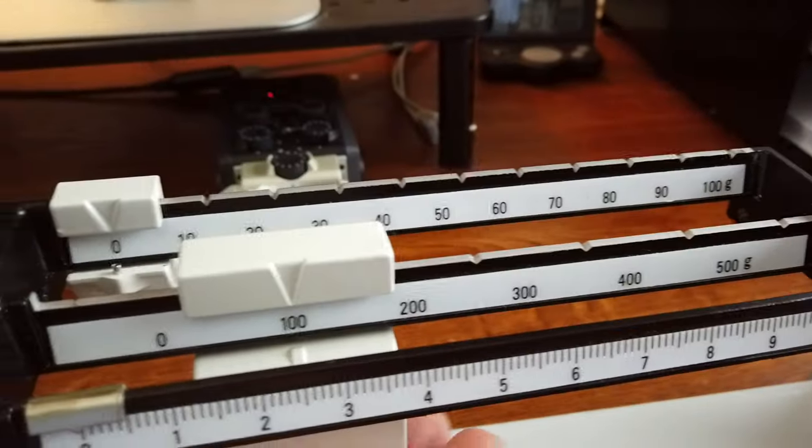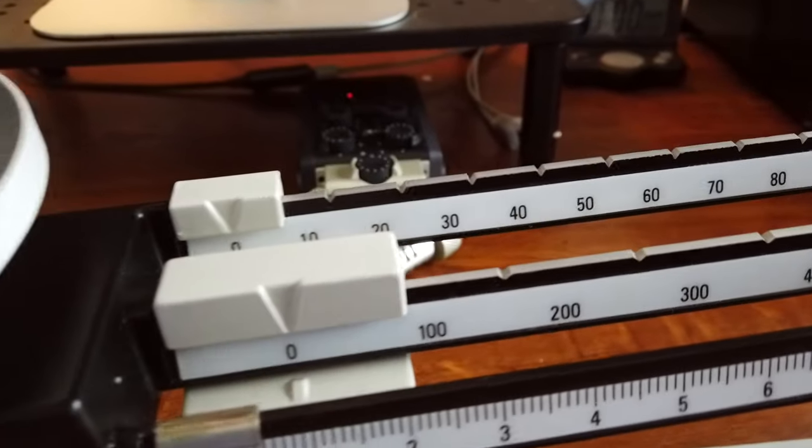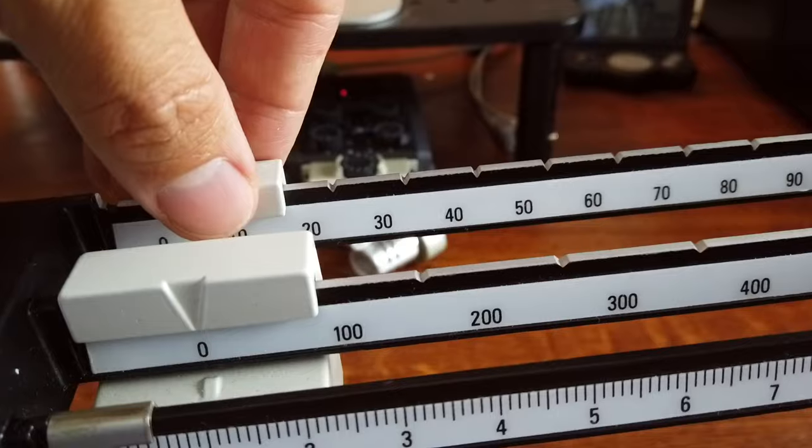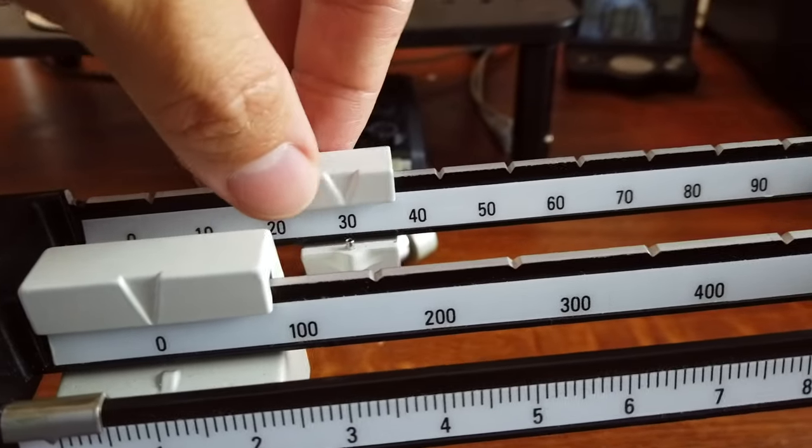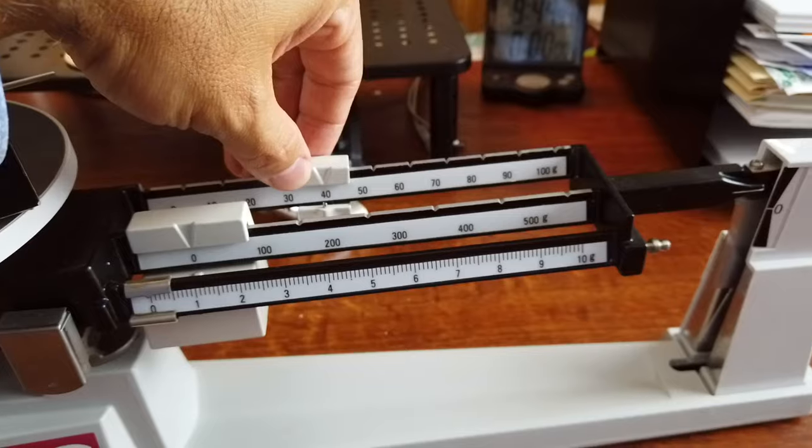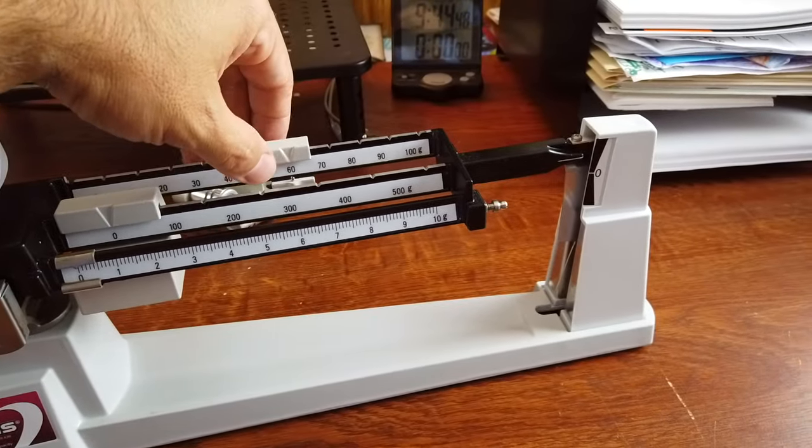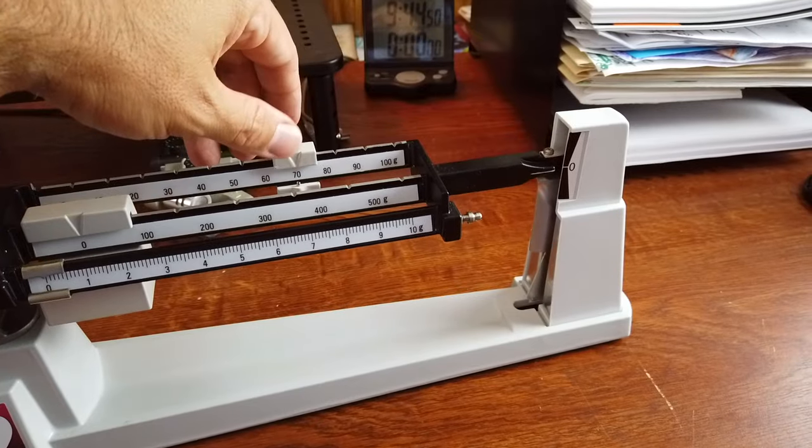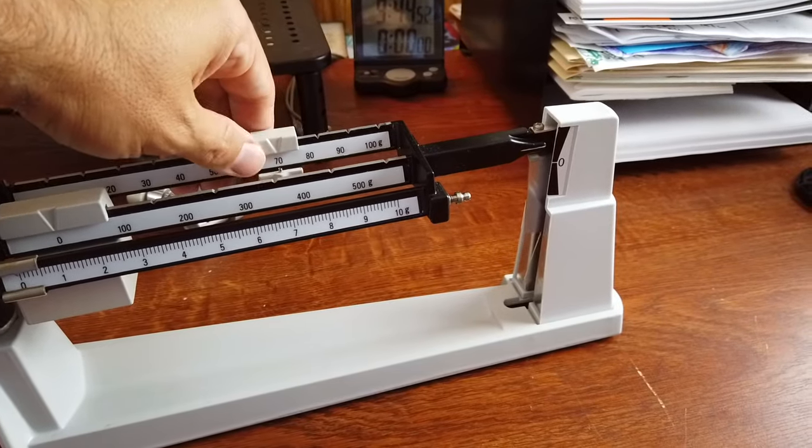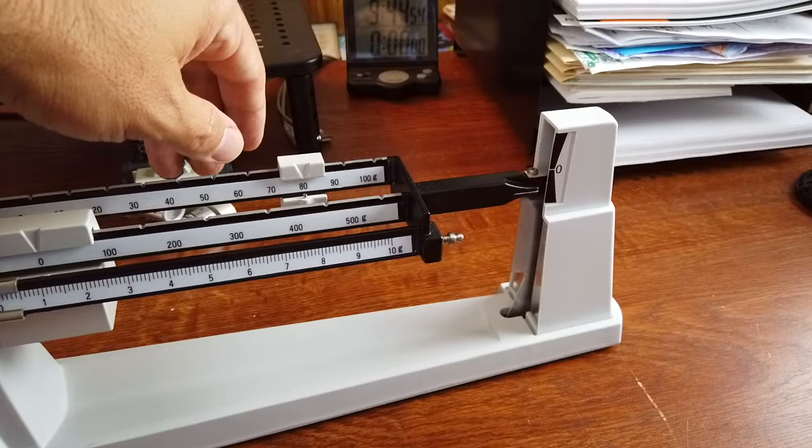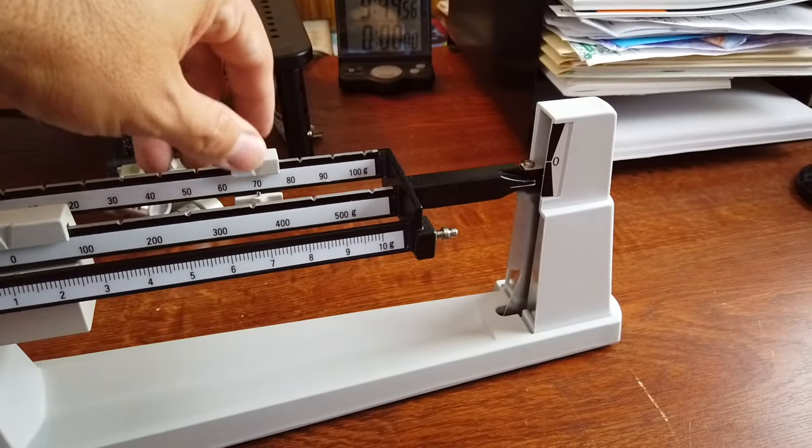Okay, so the 100 gram rider is useless. We'll go to the 10 gram rider. And I'll keep moving that out until the balance drops. Okay, so 80 is too much. So I back off to 70.